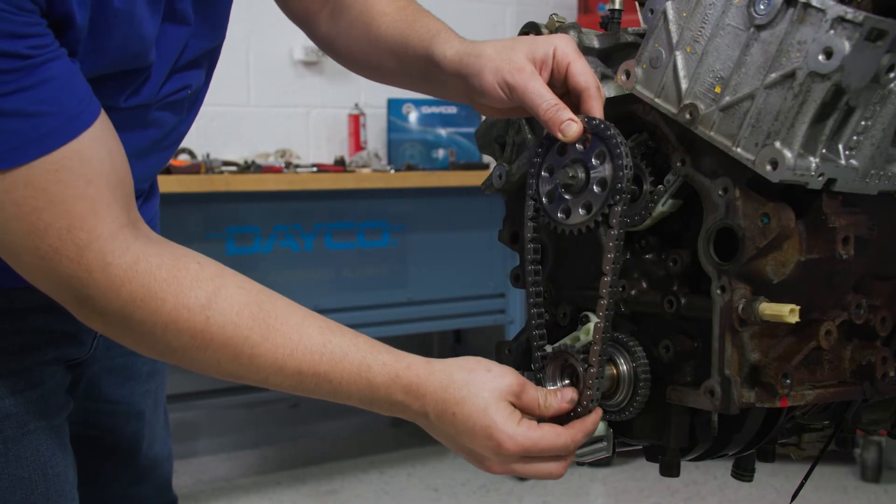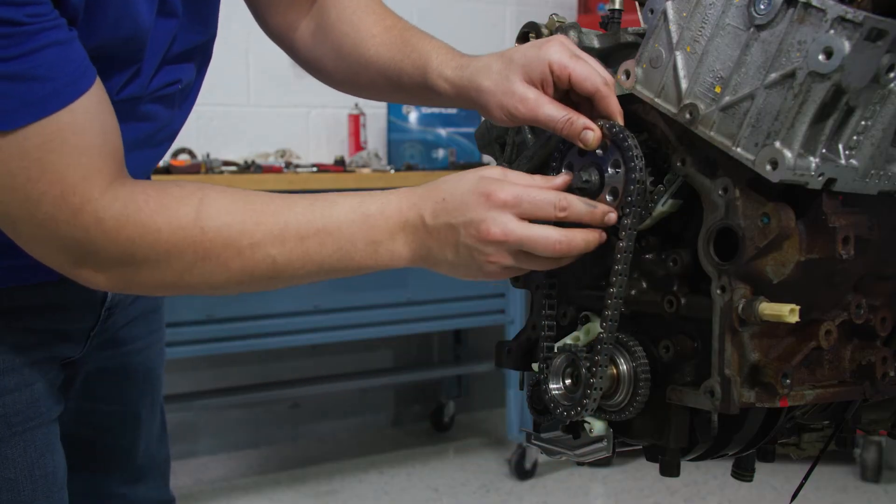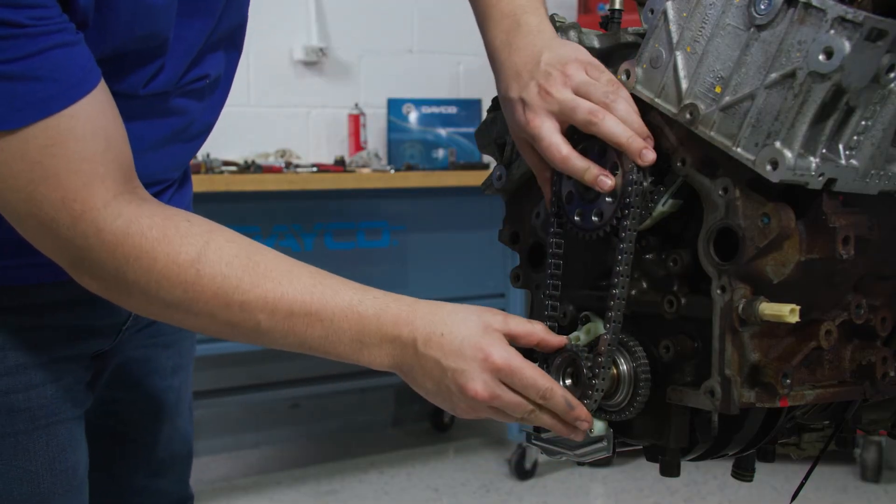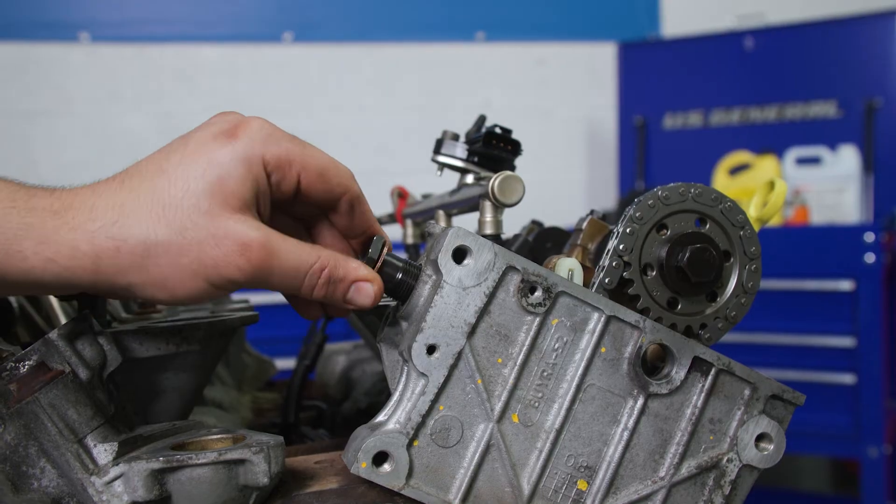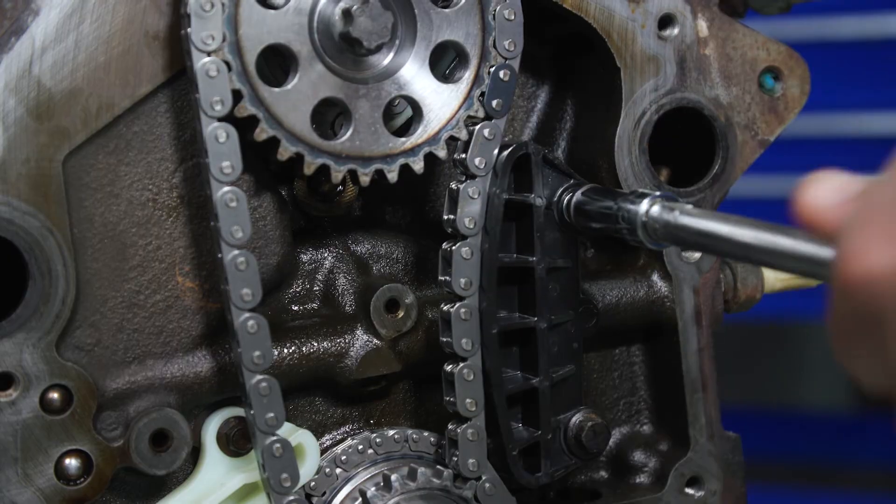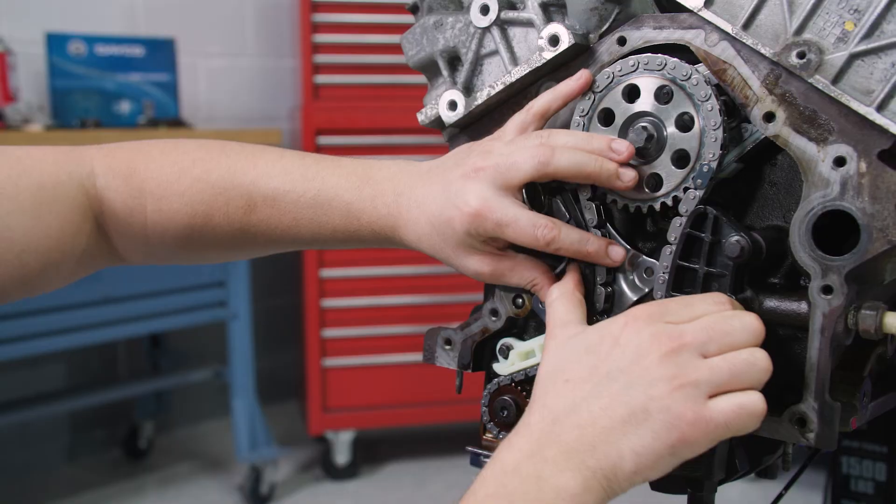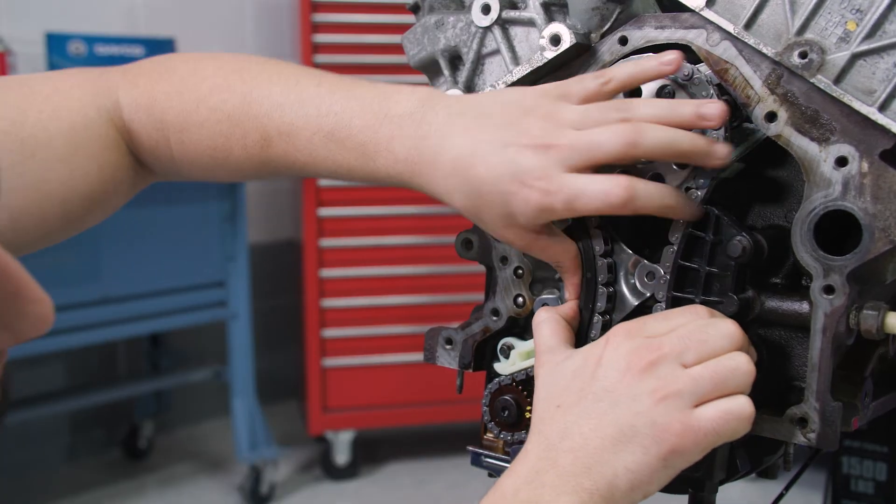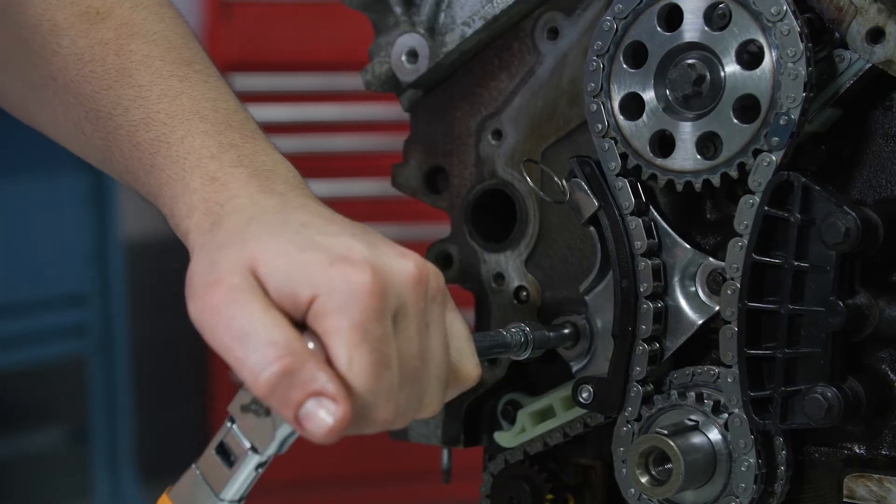Install the primary drive chain and sprockets, keeping the top gear bolt slightly loose. Then install the tensioner tool into the tensioner bore. Place the primary guide and tighten the bolts to 14 foot-pounds. Then install the primary chain tensioner and torque the bolts to 89 inch-pounds.